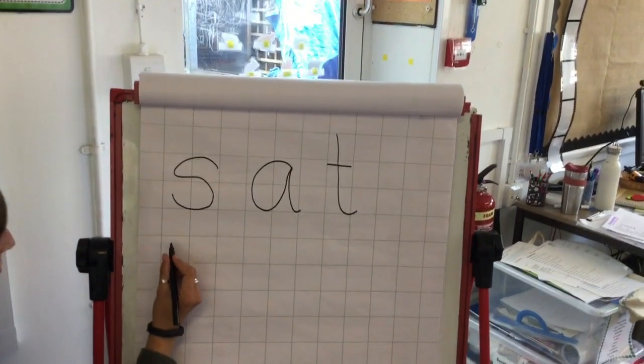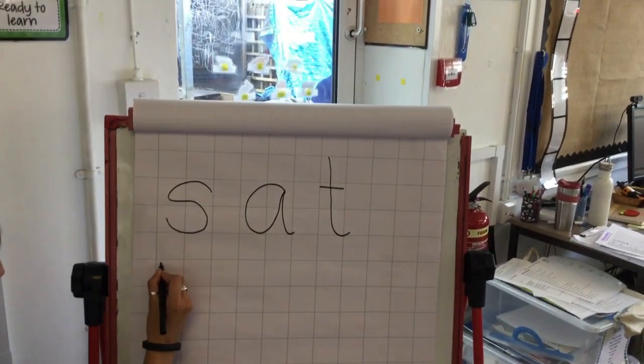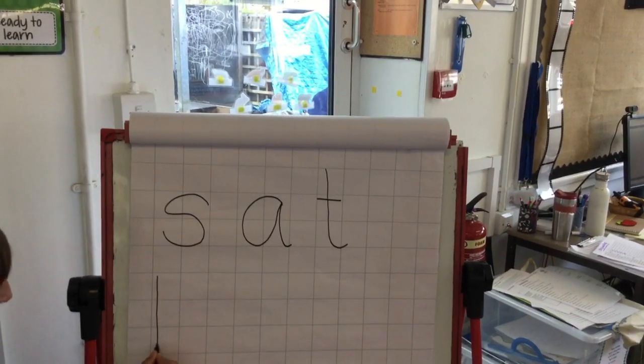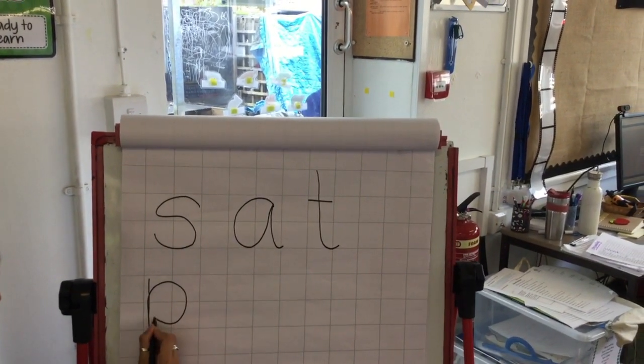And our next sound is the P. We go down Pippa's plait, up, and around her rosy cheeks.